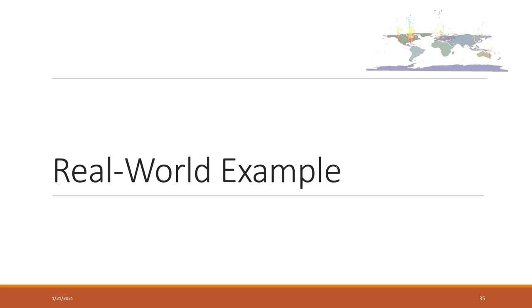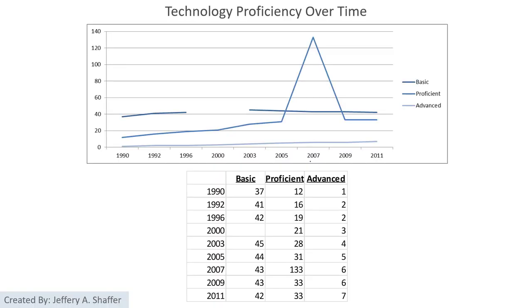The first example is called 'Technology Proficiency Over Time.' The basic idea is that we have more and more people becoming advanced in terms of technology proficiency. This is a chart probably created by default from Excel, and we know there are a lot of problems — for example, the unequal time scales.